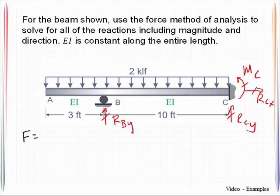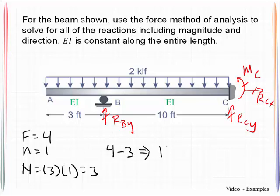That gives us the total number of unknown forces to be four. We haven't made any cuts so we have one structural piece, and so the total number of equations of equilibrium, which we have, is three. Thus we know that we are one degree statically indeterminate.